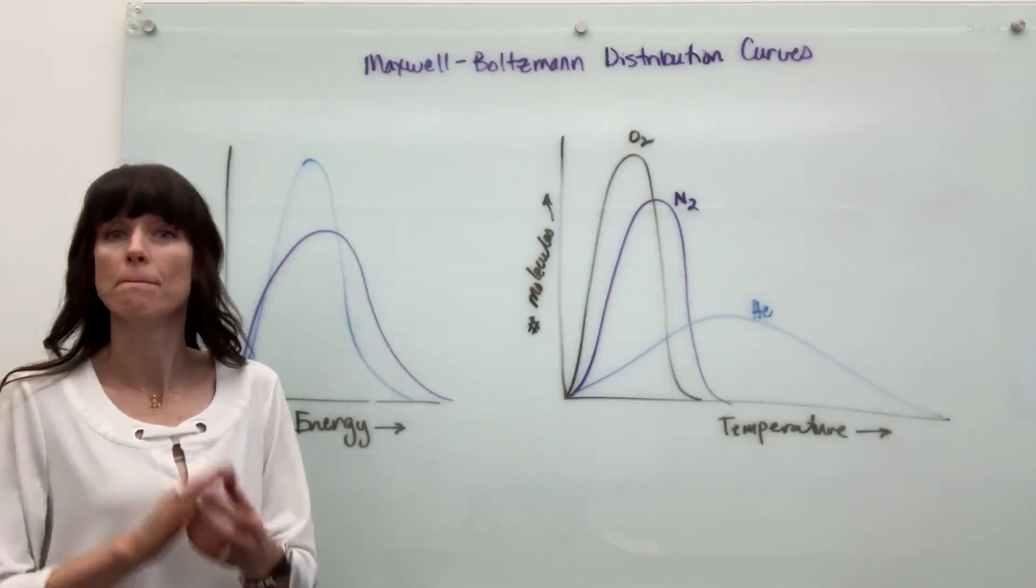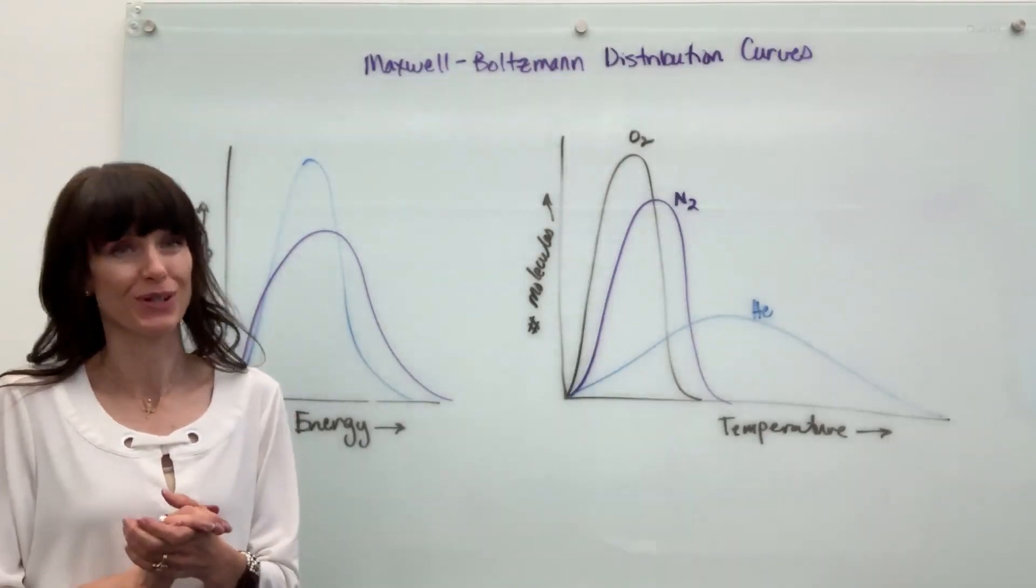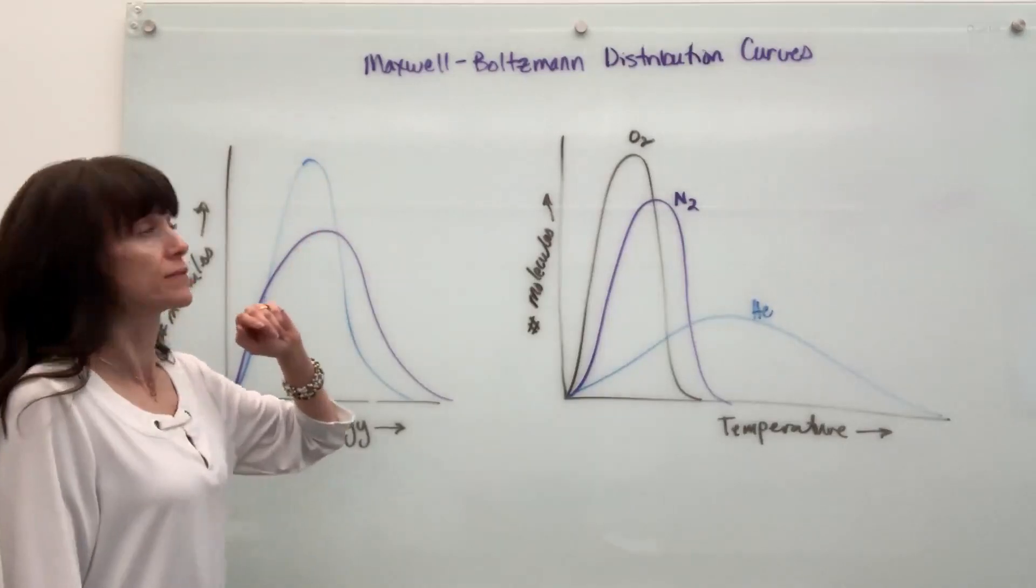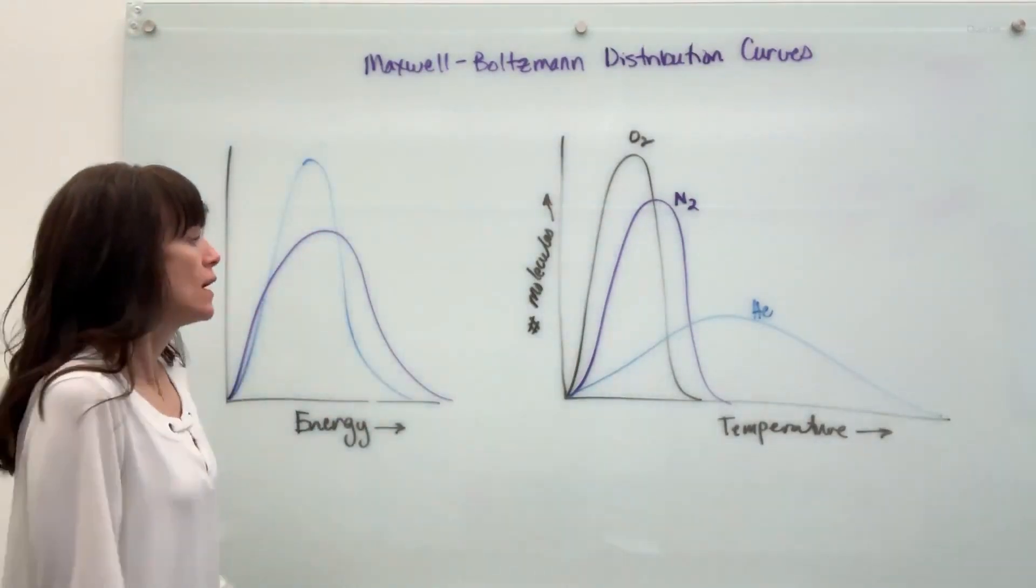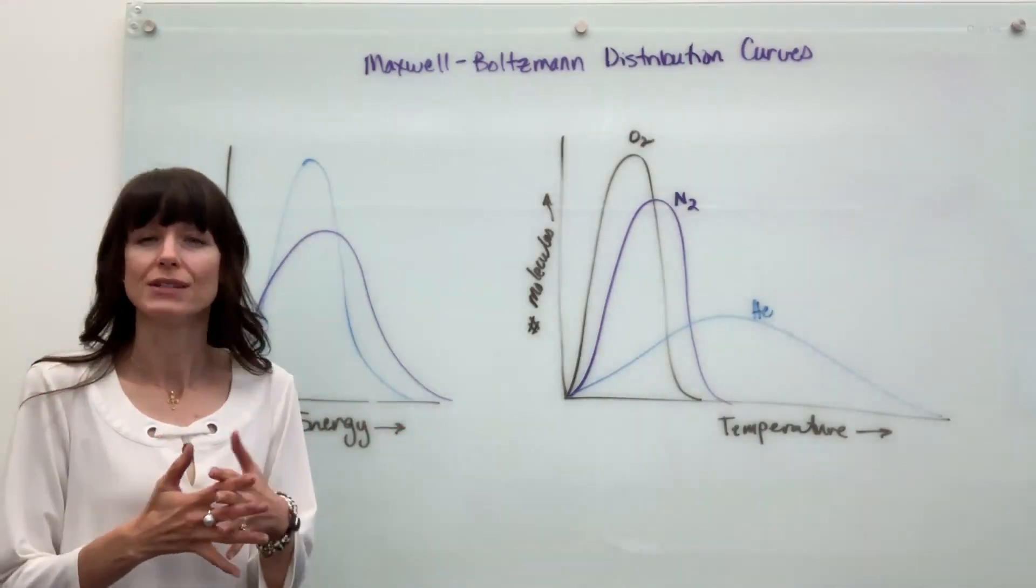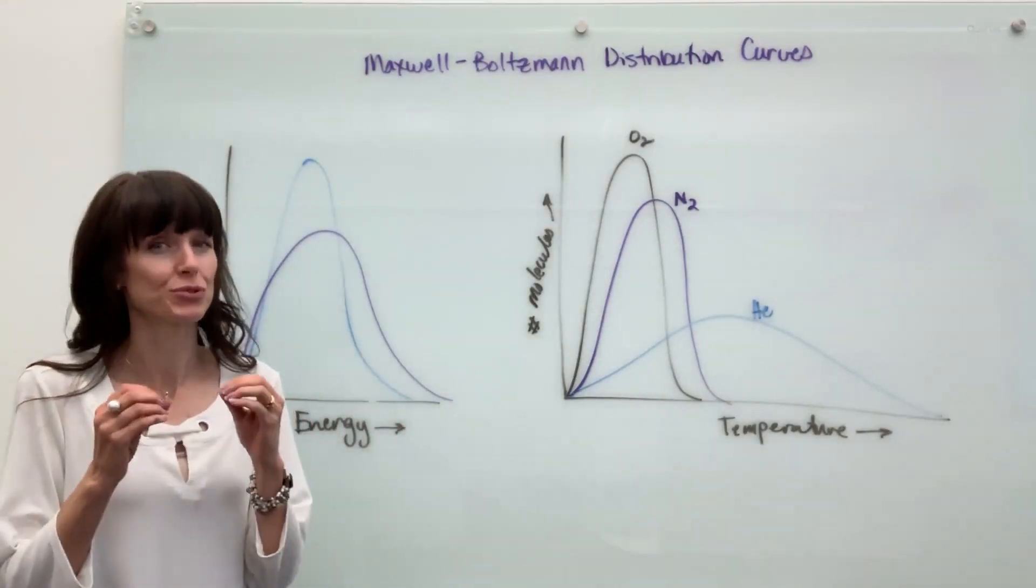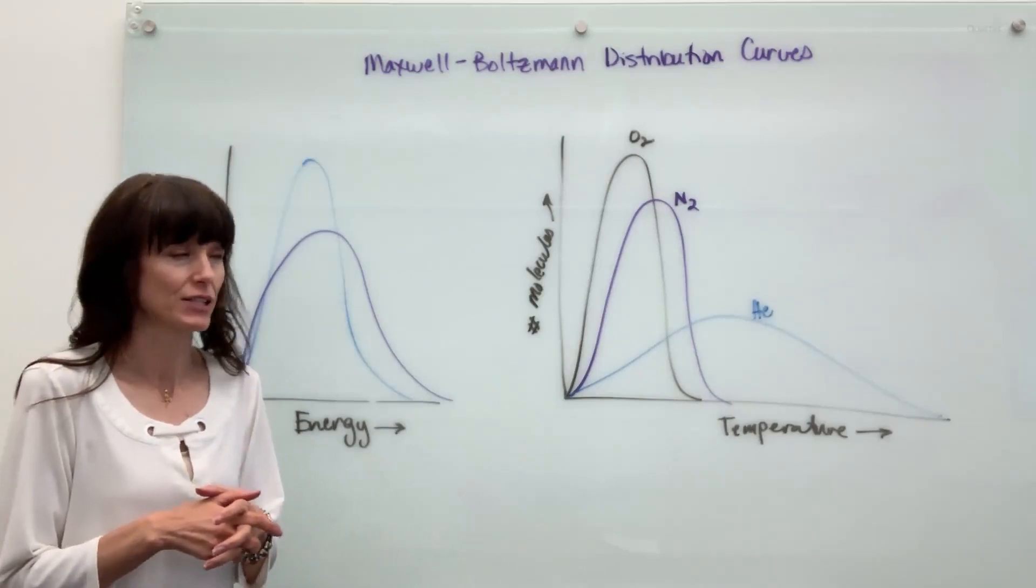We are going to talk about Maxwell-Boltzmann distribution curves. This is named after two gentlemen in the 1800s, two scientists. Let me show you how to interpret these. There's one trick that usually catches kids.